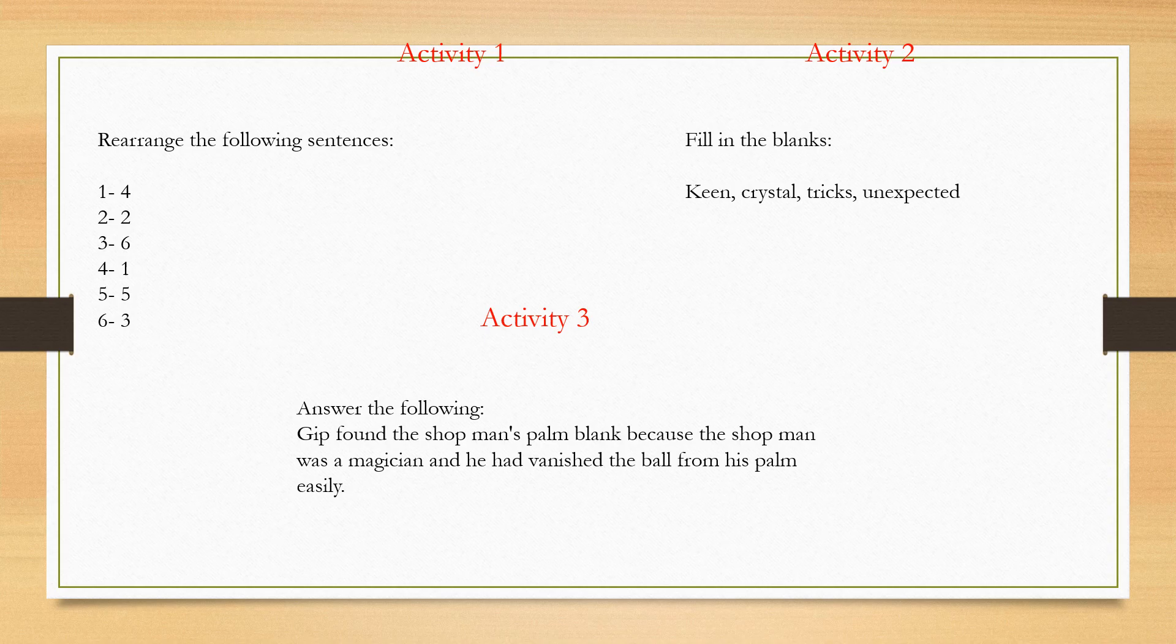Activity 3: Why did Jib find the shopman's palm blank? Jib found the shopman's palm blank because the shopman was a magician and he had vanished the ball from his palm easily. It was just a trick for him.